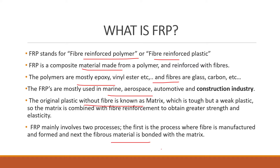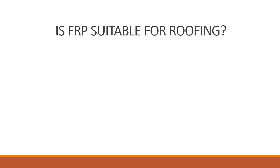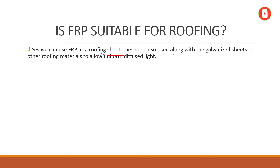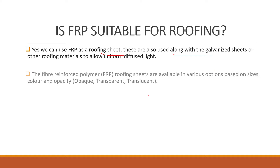Is FRP suitable for roofing? Yes, we can use FRP as a roofing sheet. These are also used along with galvanized sheets or other roofing sheets to allow uniform diffused light. You can use FRP in the middle of the roof with galvanized sheets so you get maximum light, which saves a lot of money and energy.